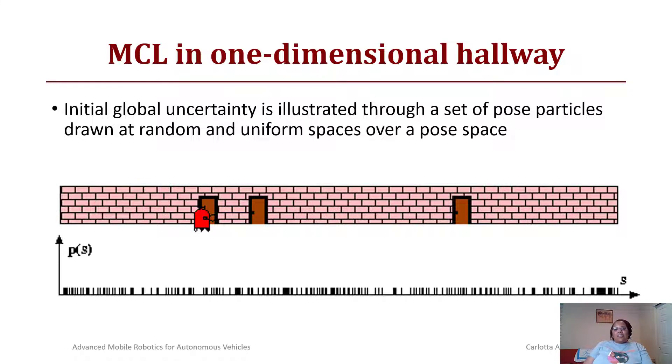Let's look at what Monte Carlo localization looks like in a one-dimensional hallway. Assume we have a robot that can only travel in one dimension along the hallway. Initially the robot is uncertain about where it is, so the probability of any certain state is uniformly distributed and represented by these particles at the line at the bottom.